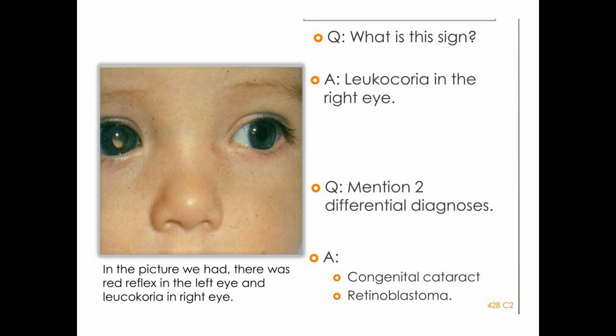If someone asks about the treatment options for congenital cataract: removal of the cataract and implantation of an IOL with anterior vitrectomy and posterior capsule CCC, which is also called rhexis.